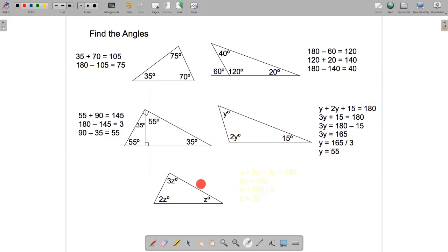This final example down here is kind of similar. Only this time, I'm not given any of the angles, but I'm told if I call this angle z, this angle is twice as big, 2z. This angle is three times as big, 3z. So the equation this time will be z plus 2z plus 3z is 180.